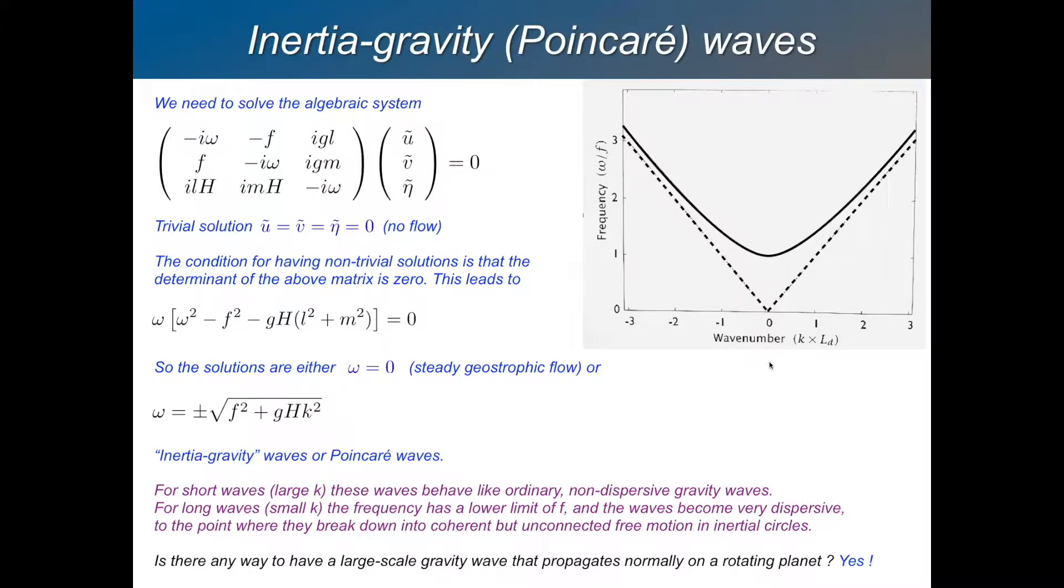And so what's happening at that extreme? This is a dispersive wave, right? It's called an inertia gravity wave or a Poincaré wave. And at large wave numbers, it starts to behave rather oddly. Because if you look at the phase speed, it changes and becomes faster and faster.